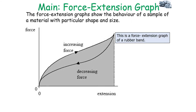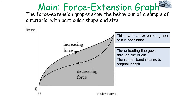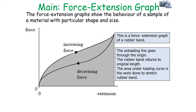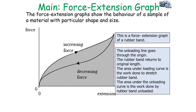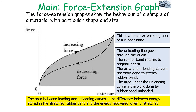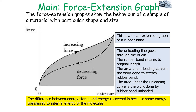Force extension graphs show the behaviour of a sample of material with a particular shape and size. In this force extension graph of a rubber band, the unloading line goes through the origin because the rubber band returns to its original length when the deformant force is removed — it is acting elastically. The area under the loading curve is the work done to stretch the rubber band; the area under the unloading curve is the work done by the rubber band when unloaded. The area between the two curves represents the energy not recovered, transferred to the internal energy of the molecules.